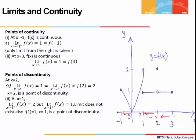Let's check x = 3. The function is not defined to the right of 3, so we only check what happens when we approach from the left. As x approaches 3 from the left, the function approaches 1, and the value of the function at 3 is also 1. So at x = 3, the function is continuous since the limit equals the value of the function.